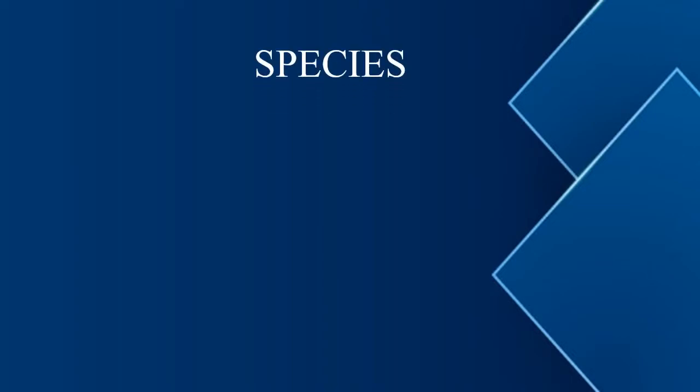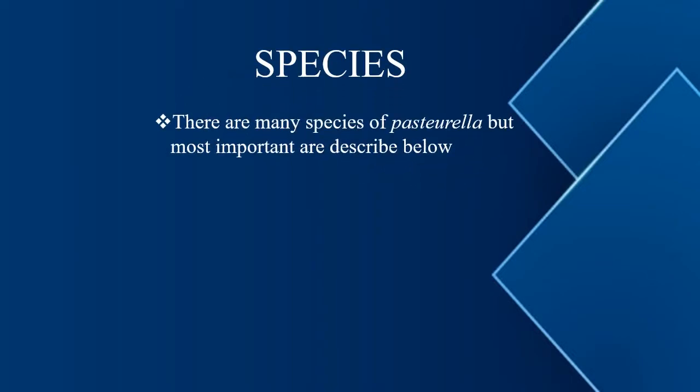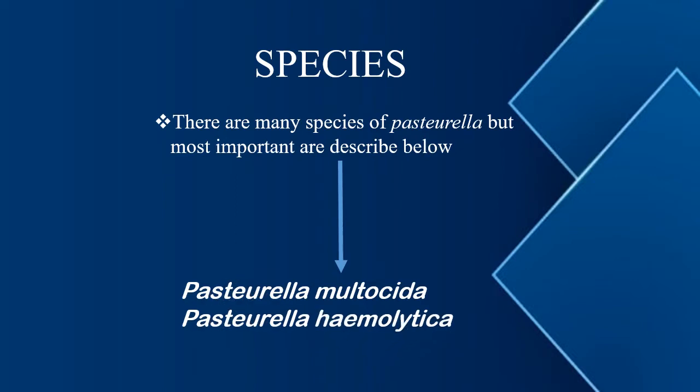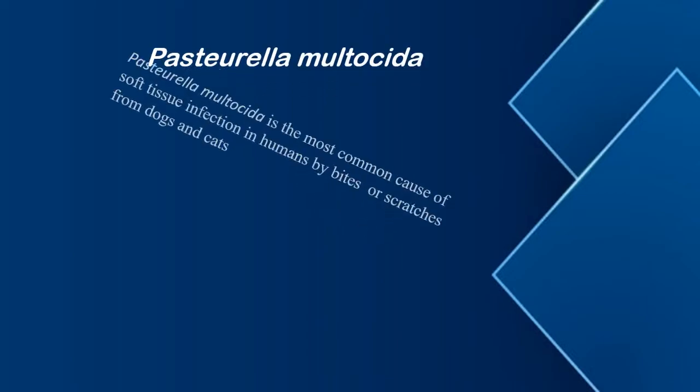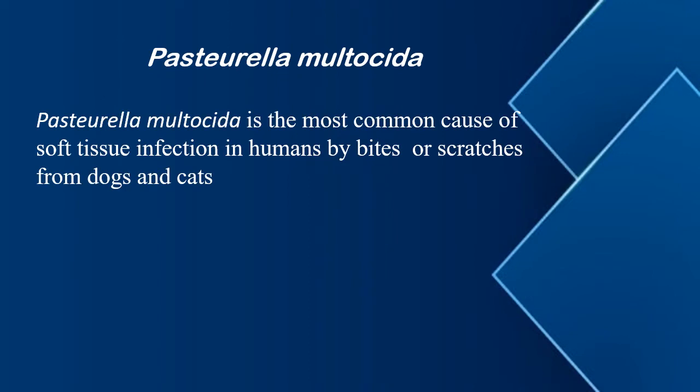Next is species. There are many species of Pasteurella, but the most common and important are Pasteurella multocida, Pasteurella hemolytica, Pasteurella canis, and Pasteurella avium. Pasteurella multocida is the most common cause of soft tissue infection in humans through bites and scratches from dogs and cats.